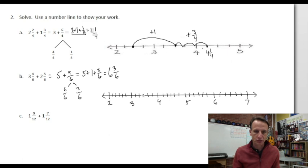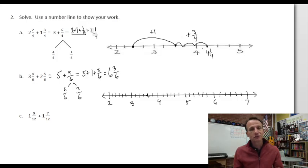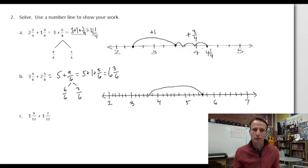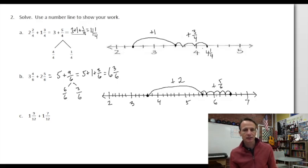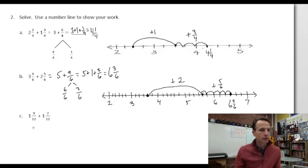So we start from three and four-sixths. We add the two wholes, which takes us up to five and four-sixths. Then we draw the hop backwards to find that point, and then we need another five-sixths added on. This is plus two and plus five-sixths, and that takes us to six and three-sixths — sure enough, that's what we already knew.